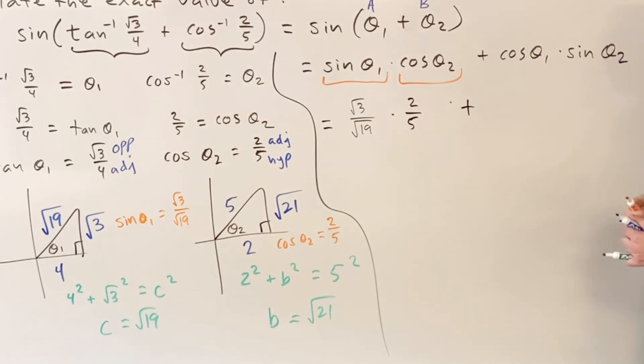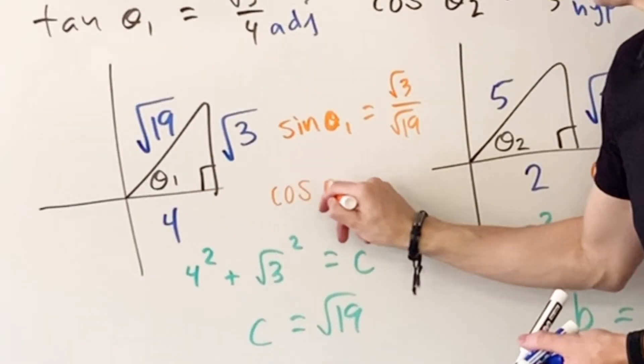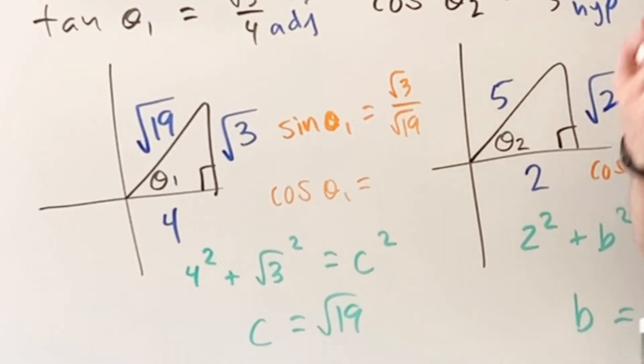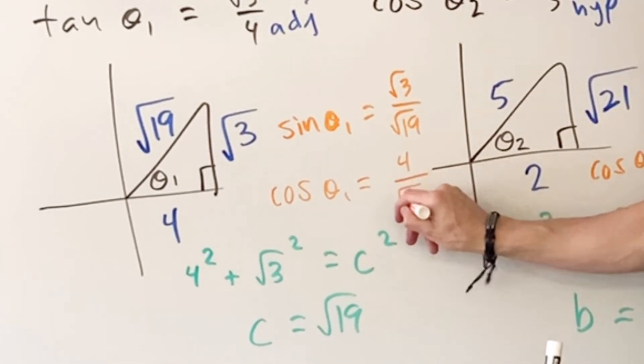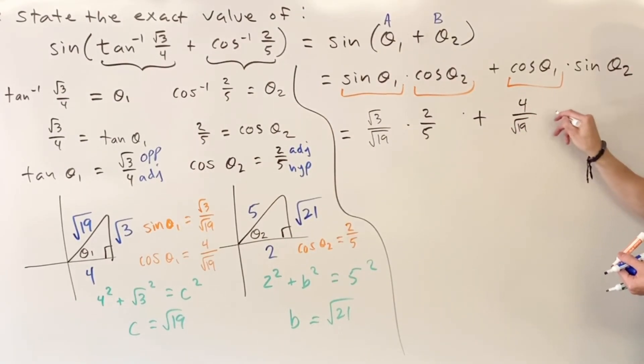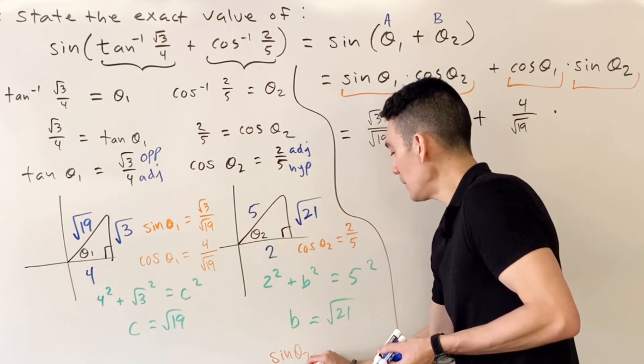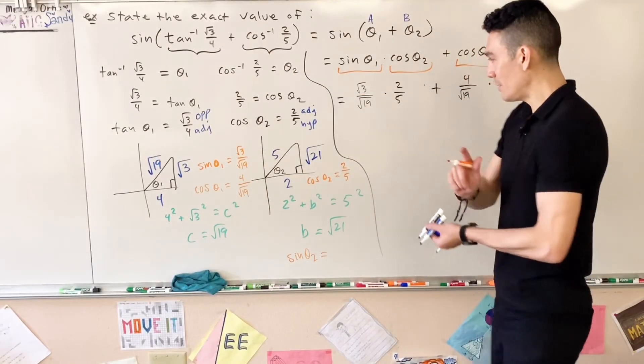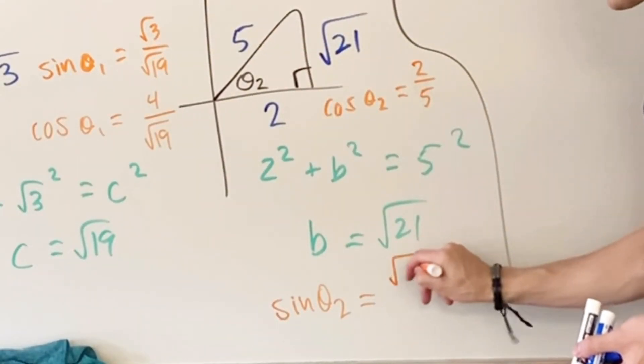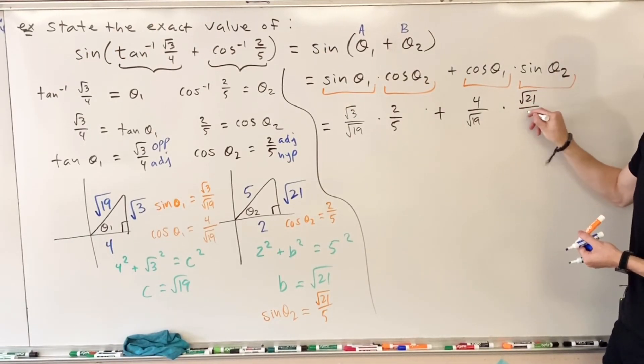Addition symbol. Now tell me what cosine theta one is. Cosine theta one is over there, so cosine is adjacent over hypotenuse, so this is 4 over square root 19. Multiplication. And now finally what's sine of theta two? Theta two is here, the sine of theta two—sine is opposite over hypotenuse, so that's square root 21 over 5.